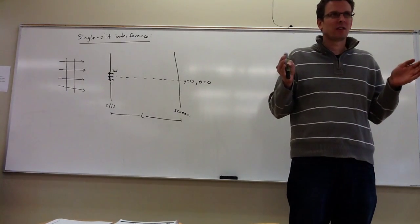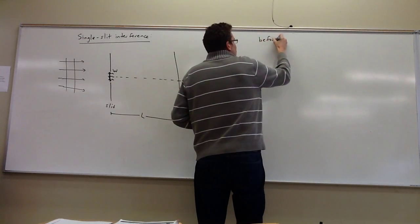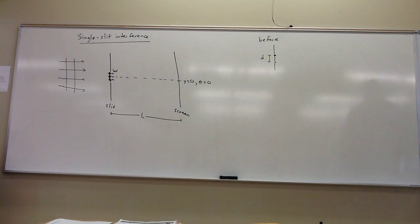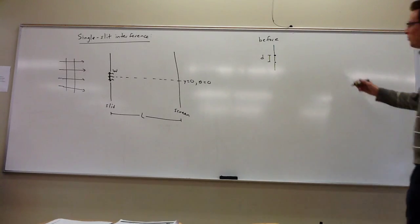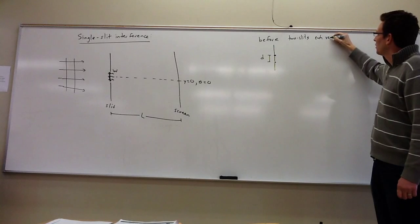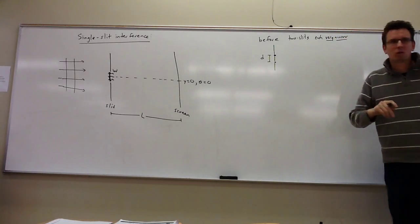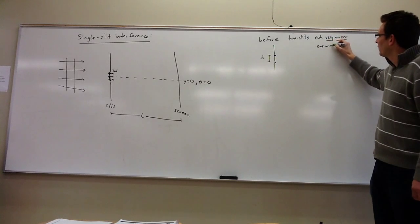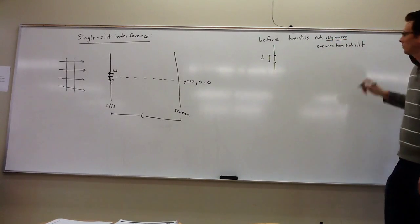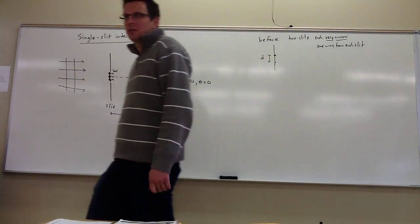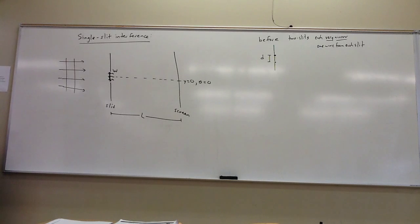So now we have one slit of finite width. Before, what we had was two slits of separation d, but we basically thought of them as being infinitely narrow, so only one wave could get out of each one — each being very, very narrow such that only one wave really got through each one. Now we're saying we only have one slit, but that slit has finite width, and so waves from one part can interfere with waves from another part. Ironically, we're going from two slits down to one slit, but we have more interference than before.